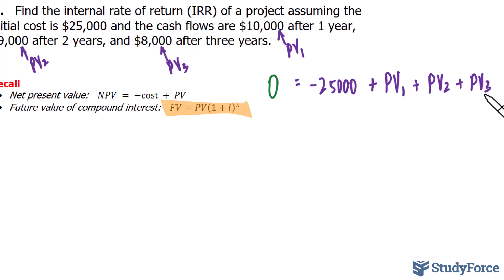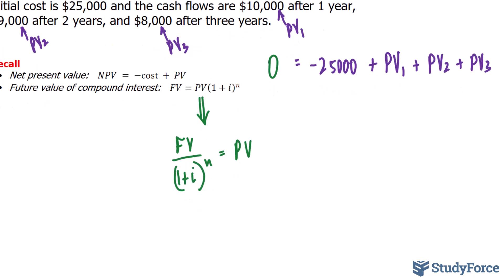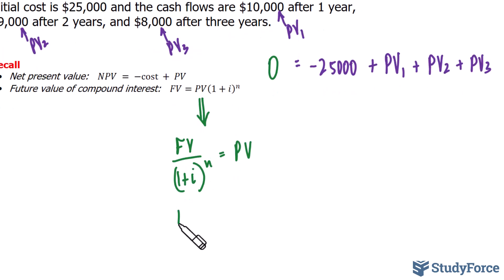For that, we'll use the future value of compound interest formula, and we'll manipulate this equation for PV. Simply divide both sides by 1 plus i raised to the power of n. So I have FV over 1 plus i raised to the power of n equals PV. Now to find the present value of $10,000, we will substitute into FV, which represents the future value, the amount, $10,000.